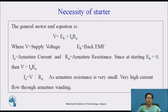In general, the motor EMF equation is given by V = E_B + I_A × R_A, where V is the supply voltage, E_B is the back EMF, I_A is the armature current, and R_A is the armature resistance. Since at starting, back EMF is 0 because the conductors are stationary — back EMF is developed due to cutting of flux by the conductor — if the speed is 0, back EMF is 0, then V = I_A × R_A, so I_A = V / R_A.